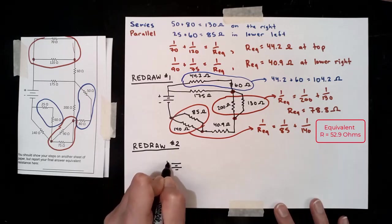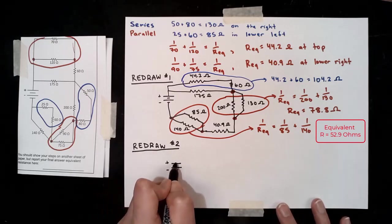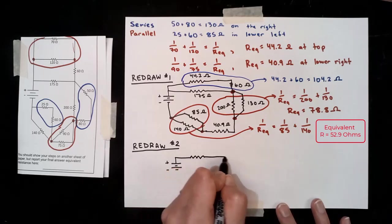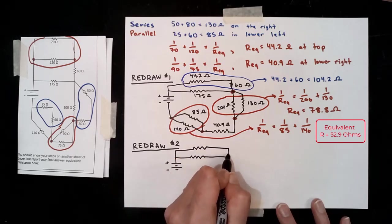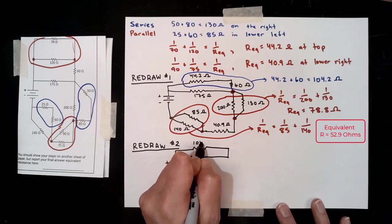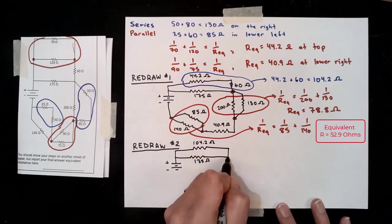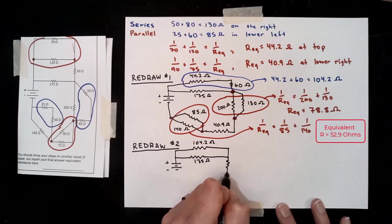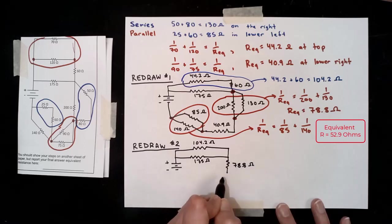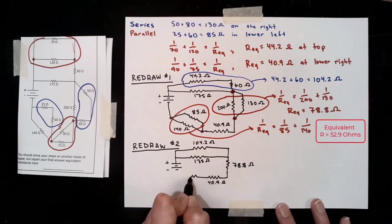So let's redraw. What do we have left at this point? We still have the 175 ohms that we have not been able to do anything with quite yet. But now it is in parallel with this 104.2 ohm resistor. Then we've got the 78.8 ohms, then the 40.9 ohms, and then the 52.9 ohms.